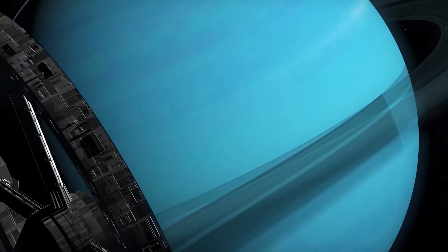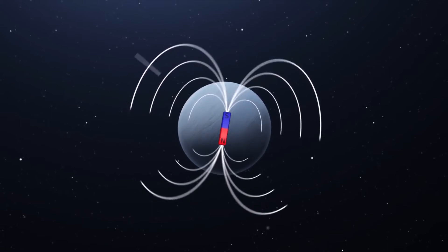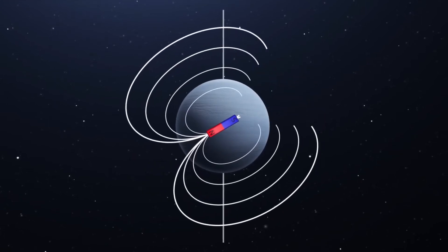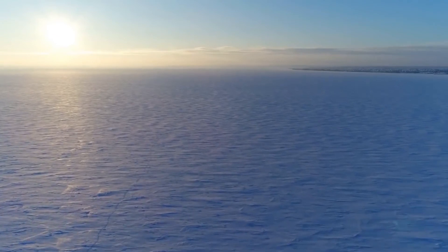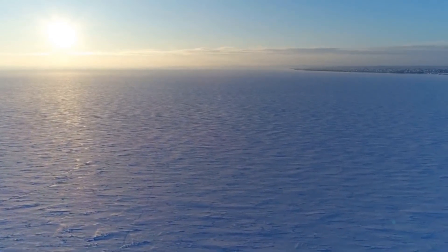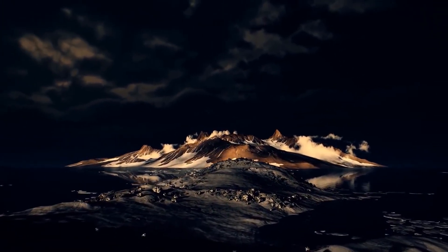Magnetosphere and Auroras: Neptune has a complex magnetic field that is tilted relative to its rotational axis. This results in unique interactions with the solar wind and the creation of Auroras near its poles. The details of Neptune's magnetosphere, how it generates and sustains its magnetic field, and the nature of its auroras are still being studied.